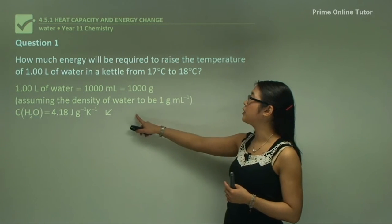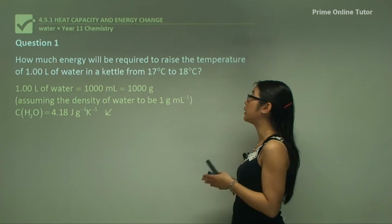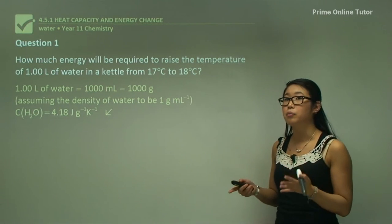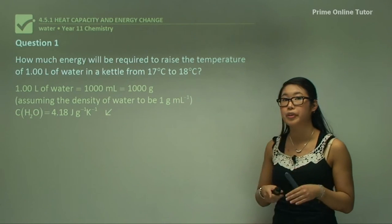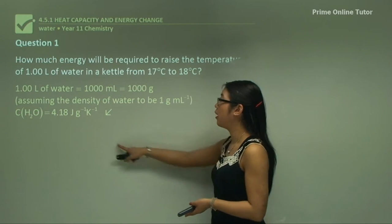We're looking at one degree, one Kelvin, because one degree Celsius change equals one Kelvin change. Using the formula, we don't even need to use it here because we know that to change one degree Celsius is the specific heat capacity, which is 4.18 joules.